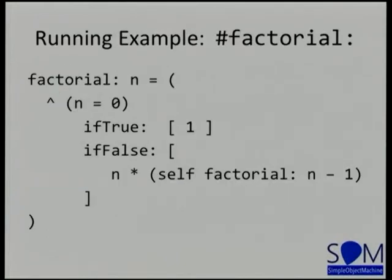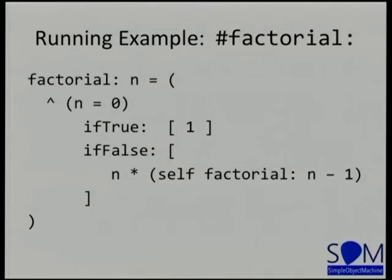To explain how that works, let's look at factorial — I'm using it as my running example to keep things simple. The first thing you notice is those two things here are actually one method invocation — a message send in Smalltalk. The receiver is the evaluation result of that parenthesis. We have the simple comparison whether n is zero. If true, we evaluate a block which is a closure and return just one. Otherwise, we recursively evaluate the factorial.